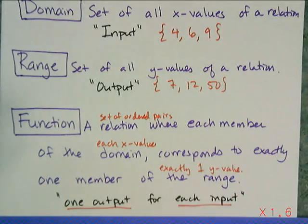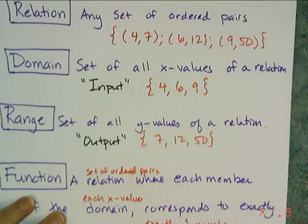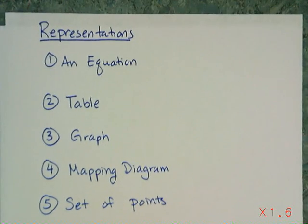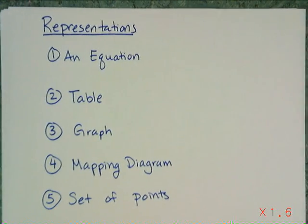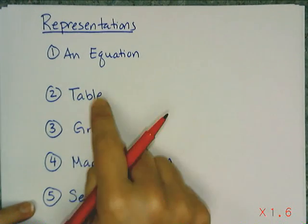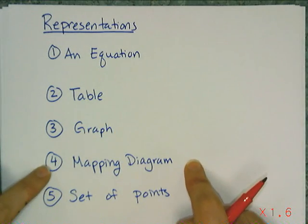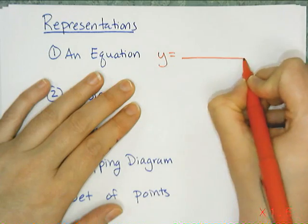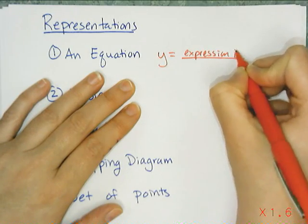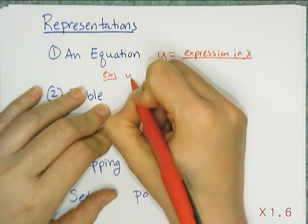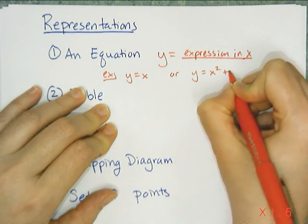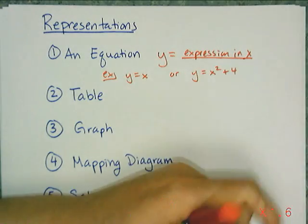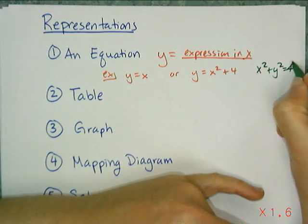Let's look at ways to represent functions and see if something's a function or not from various representations. There are five ways to view a function: as an equation, in a table, in a graph, in a mapping diagram, or as a list of points. For equations, they have to be y equals something in terms of x — you don't do anything to the y. For example, y = x or y = x² + 4 are functions. Something like x² + y² = 5 is not a function because you're doing something to the y.